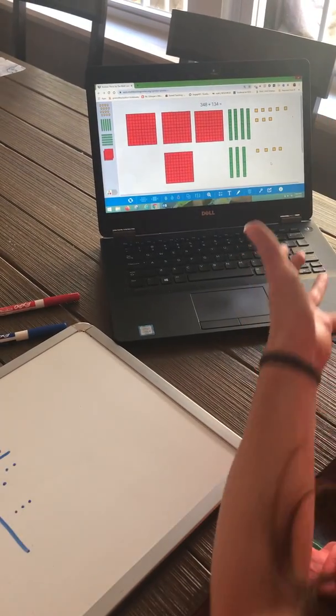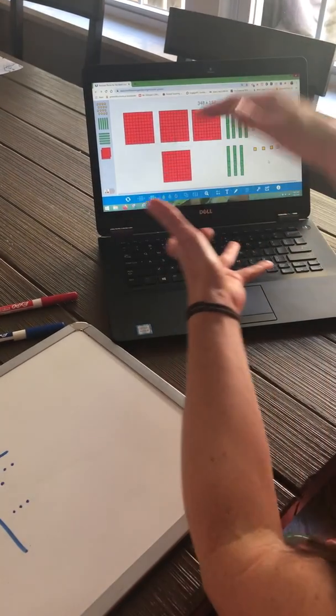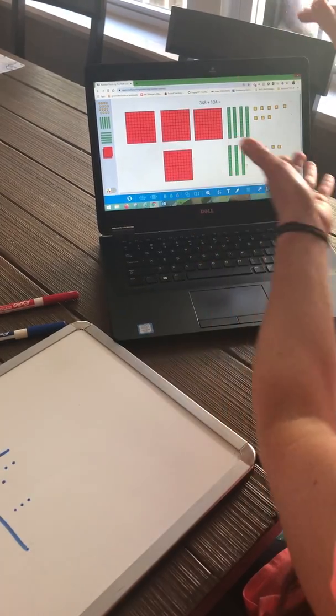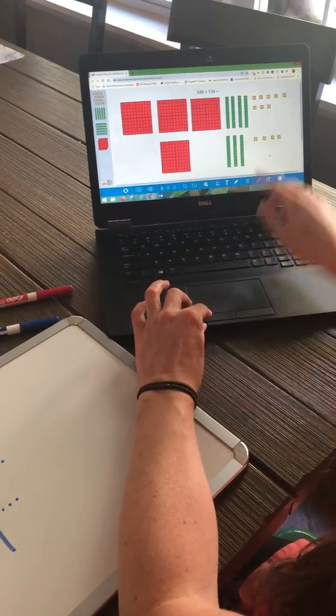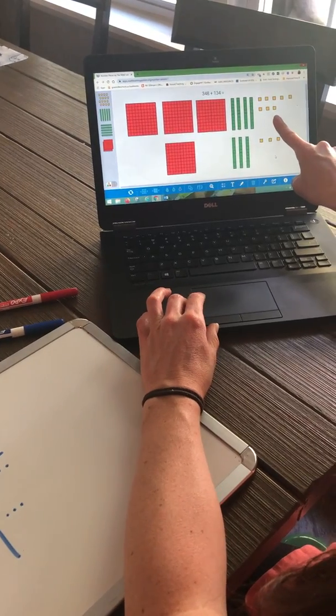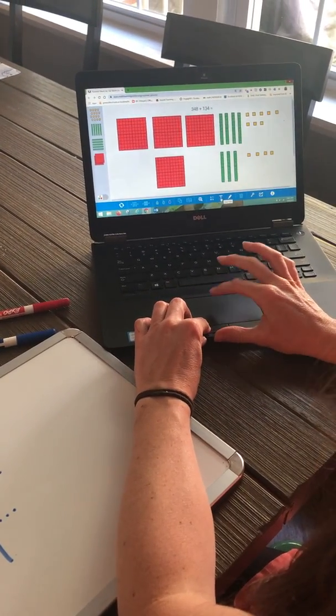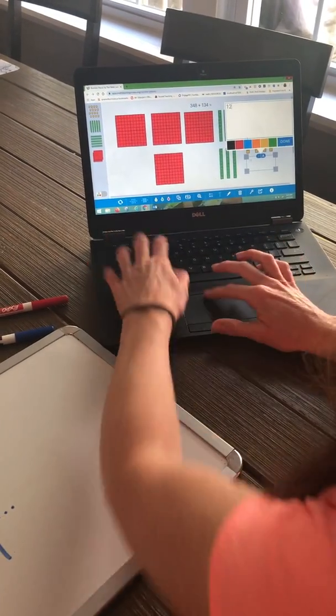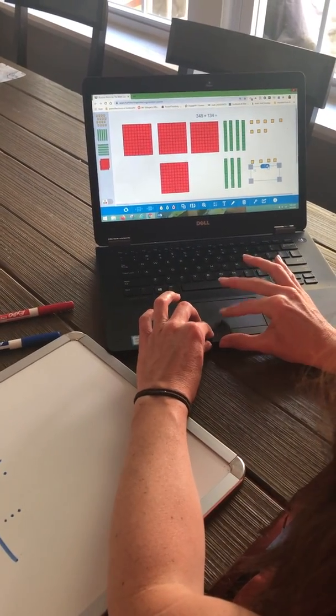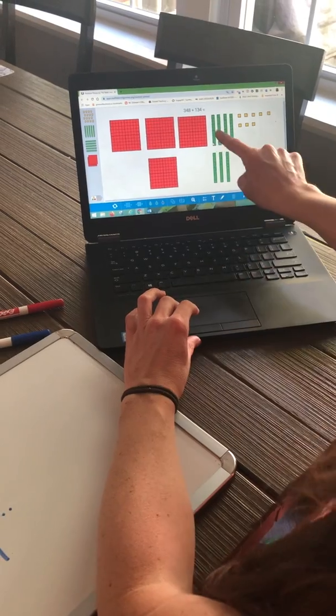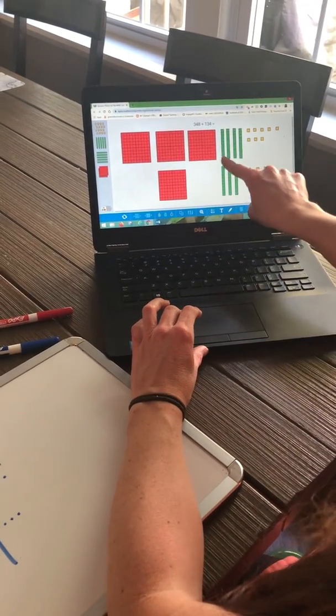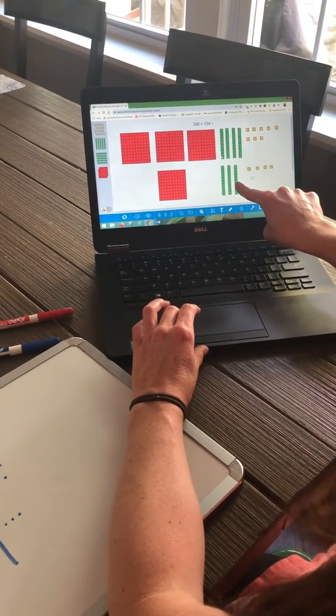So now adding means to combine like values. So I'm going to combine the 1s, the 10s, and the 100s. I have 8 1s right here, and I am combining 4 1s. 8 1s plus 4 1s is 12 1s. I've got 4 10s plus 3 10s. 4 10s plus 3 10s is 7 10s.